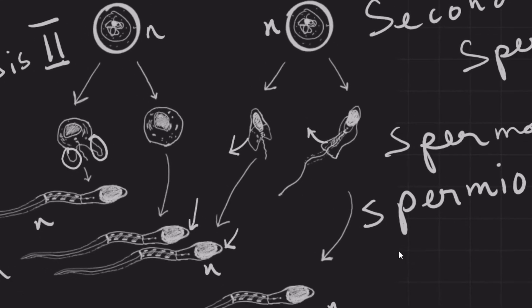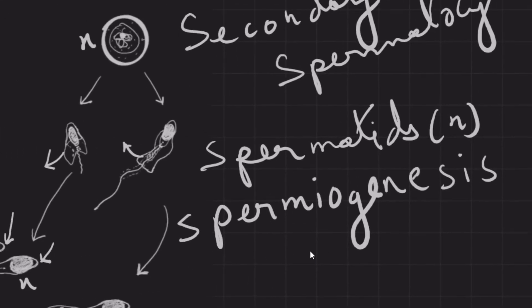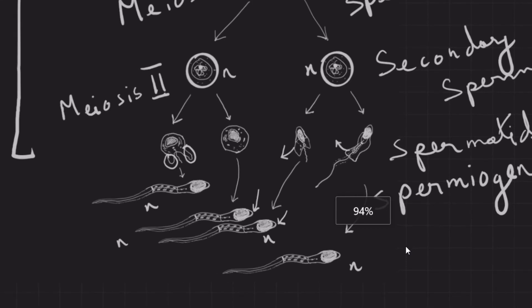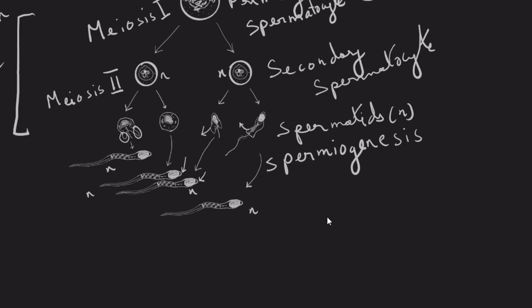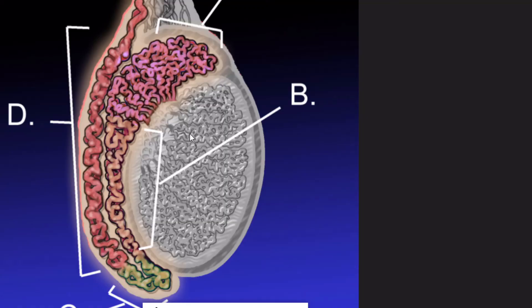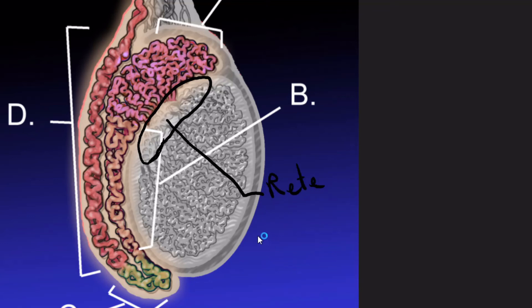During spermiogenesis, the spermatids become mature and continue development as they travel from the seminiferous tubules. The fully matured spermatozoa are conducted into the epididymis through a complicated network of tubules joined by many seminiferous tubules, referred to as the Rete testis. From the Rete testis, sperm are conducted into the vasa efferentia — small ductules that connect the seminiferous tubules with the epididymis.